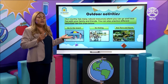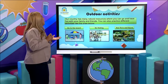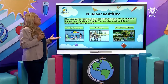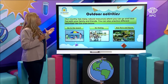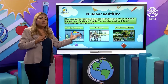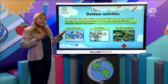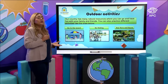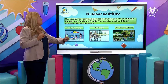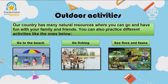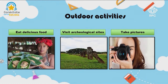What activities can we do? Our country has many natural resources where we can go and have fun with your family, with your friends, with your relatives, and you can also practice different activities. For example, you can go to the beach, you can go fishing, you can see flora and fauna, you can eat delicious food, you can visit archaeological sites, and take pictures.